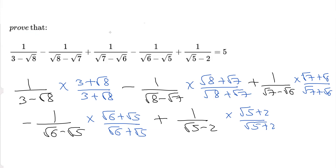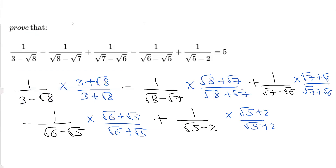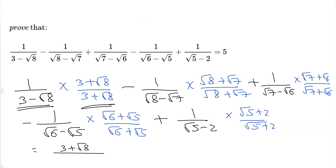Now consider the first part: 1 multiplied by 3 plus root 8 gives numerator 3 plus root 8. The denominator is in the form a squared minus b squared, since (a minus b)(a plus b) gives a² minus b². So 3 squared minus root 8 squared is 9 minus 8, which equals 1.